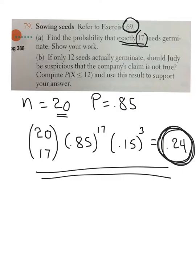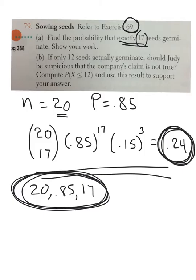Let me write it down. So it would be 20, 0.85, 17. So I'm pretty sure that's how you put that in there, those black calculators. Okay, let's look at the next question, which is letter B.